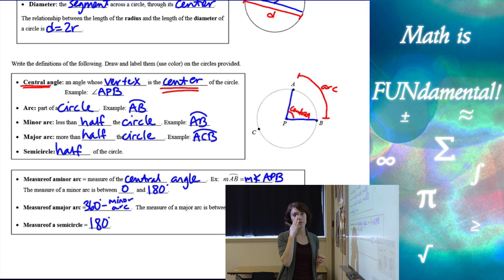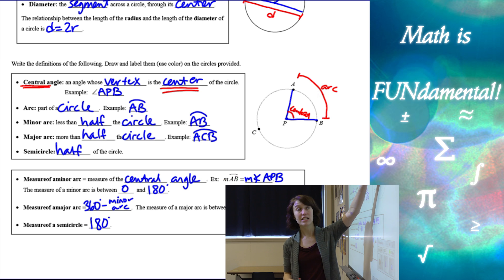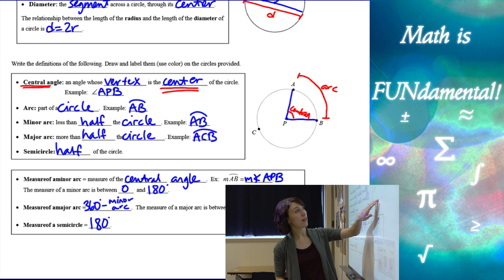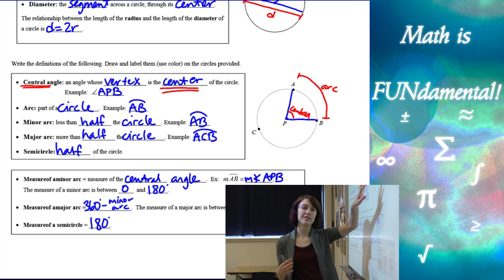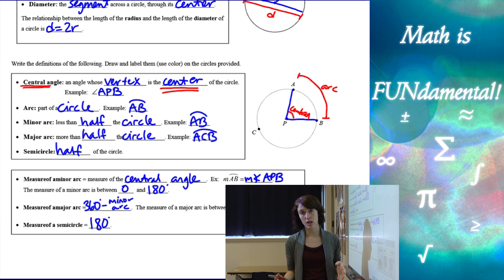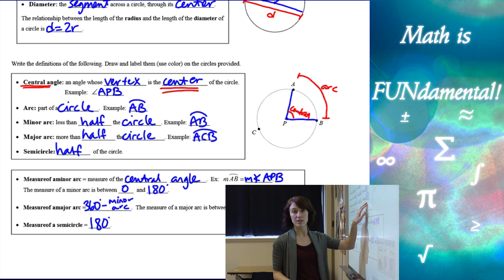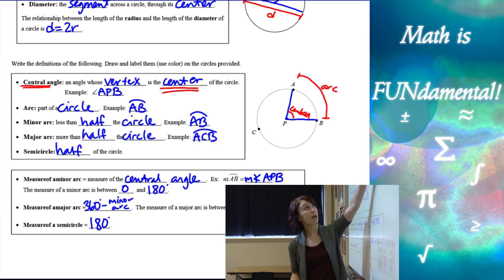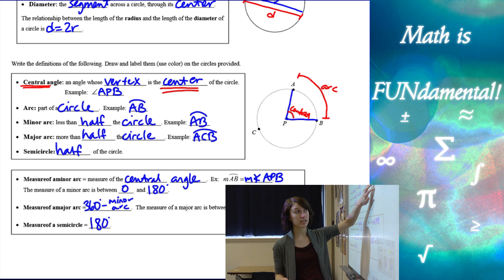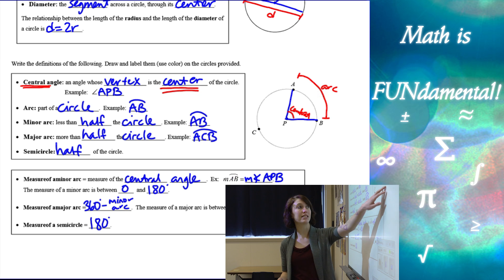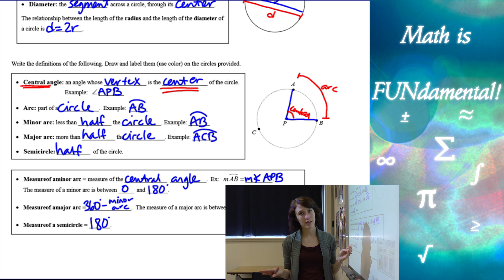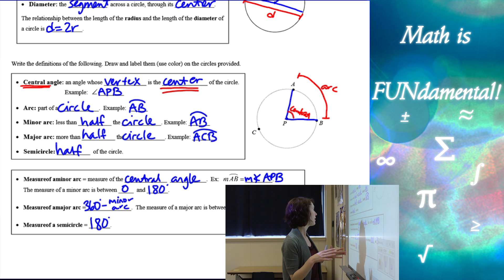A major arc is more than half of the circle. If we go from A to B one direction it's a minor arc; if we go from A to B the other direction, it's a major arc. To denote which direction: if we use only two letters like AB, we go the shortest way. If we use three letters, for example ACB, we go from A through C first and then to B. We always use either two letters for a minor arc or three for a major arc.